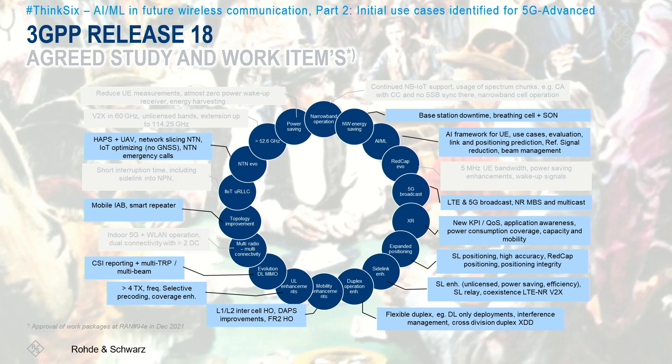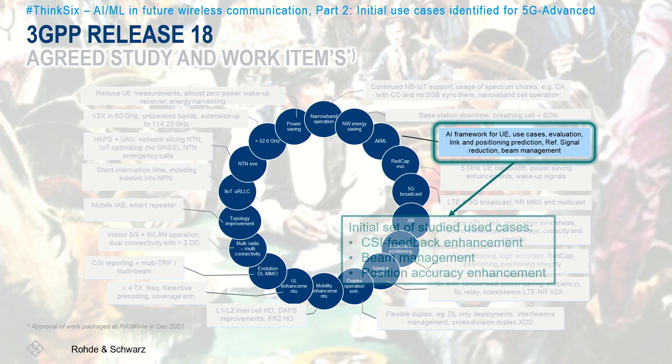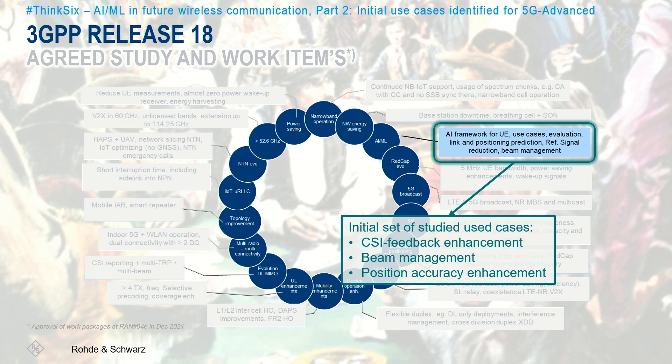Machine learning models replacing blocks in the signal processing chain is not and cannot be the first step. First, a common understanding and agreement between industry players needs to be established, as well as a framework that allows evaluation, analysis, and comparison of simulation results. This is what is going on right now within 3GPP. The standardization organization's RAN1 working group, in charge of the physical layer definition, agreed to explore three use cases over the course of the ongoing work in 3GPP's Release 18.